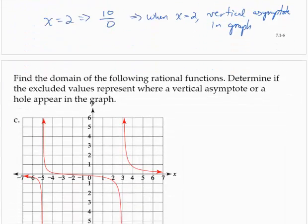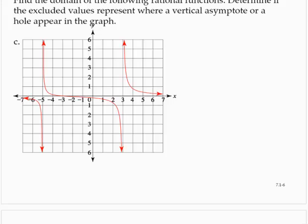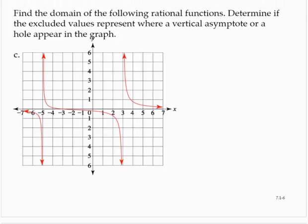In exercise C, we're asked to determine the domain again and whether we would have a vertical asymptote or a hole. In this case, we see two vertical asymptotes. We see one right here when x is negative 5, and I see another one here when x is 3.